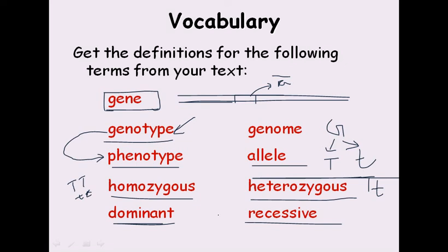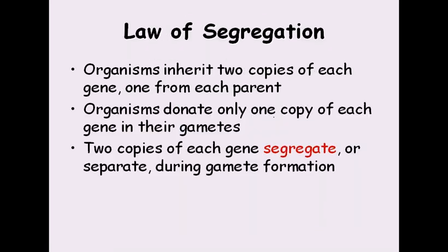Dominant alleles are written in capital letters and recessive alleles in small letters. So capital T means the tall nature, which is dominant. Above all, whatever we've discussed is within the genome. The genome is the total genetic makeup of an organism — the whole gene content of an organism is called the genome.